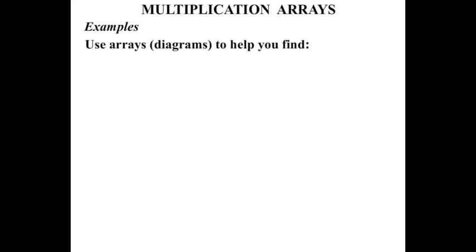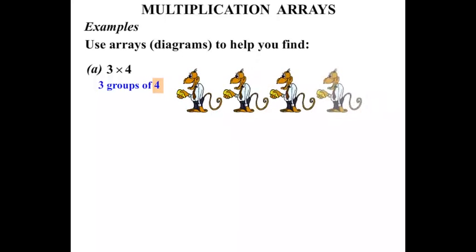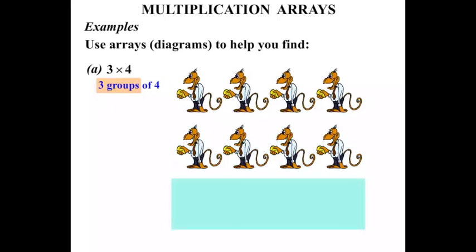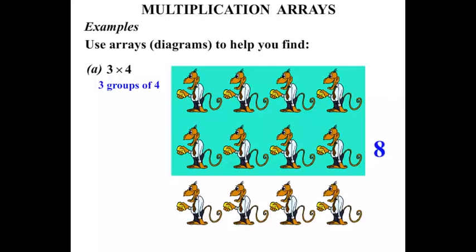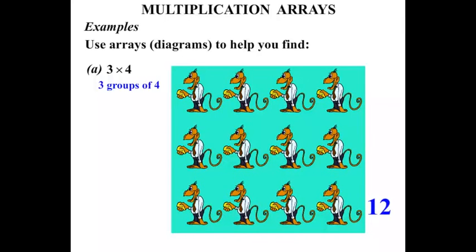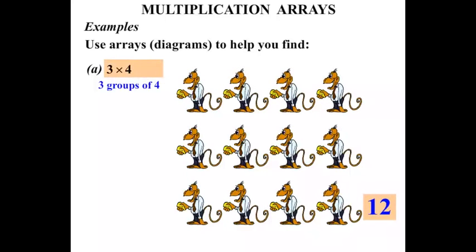Examples. Use arrays or diagrams to help you find, in part A, three times four. Now three times four means three groups of four — three lots of four. So let's think of four monkeys: one, two, three, four monkeys there. That's our one group, and we want three groups. So we've got one group, a second group, and a third group. We now have three groups. Let's count them: we've got four, another four makes eight, another four makes twelve. So three times four, three lots of four, equals twelve.